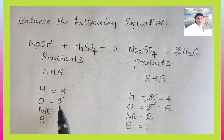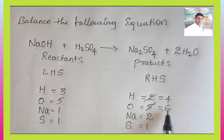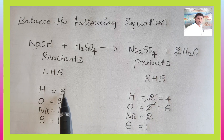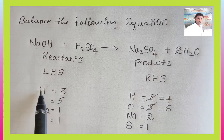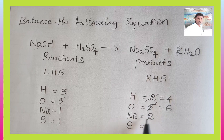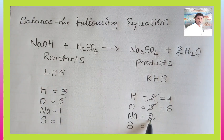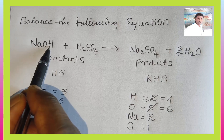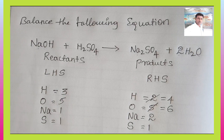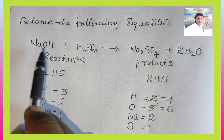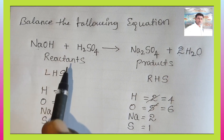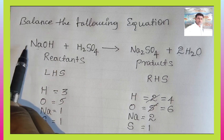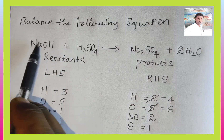Oxygen is now less on the LHS side. We increased the product side, but hydrogen is still not yet balanced. We need to change a number on the left side. On the RHS there are 2 sodium atoms, but on the LHS there is only 1 sodium atom. We can balance by increasing the NaOH coefficient, because sodium hydroxide also contains hydrogen — increasing it will raise both sodium and hydrogen counts together.